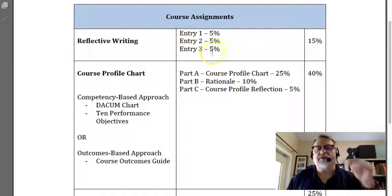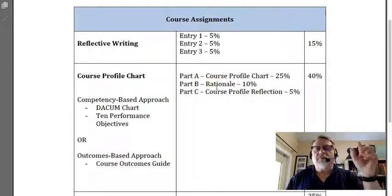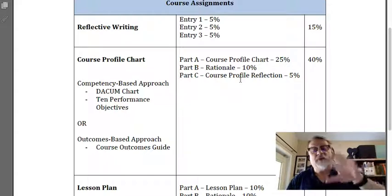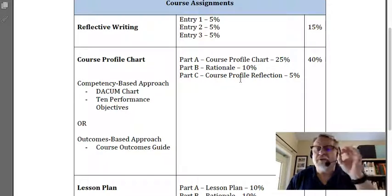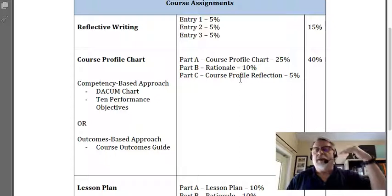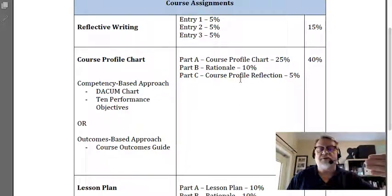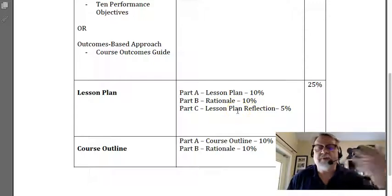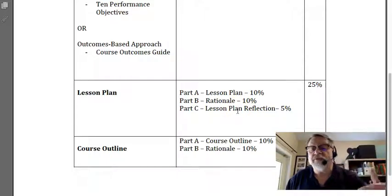It's important that you take a look at these components. Part A and B are submitted together. Part C is simply a resubmission after you've made some adjustments. You have the opportunity to reflect on the changes that I recommend, and then you simply submit those changes.